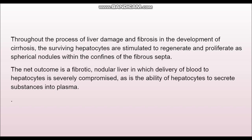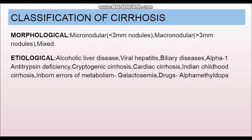Because of this chronic process of liver damage and fibrosis, cirrhosis develops. The surviving hepatocytes try to compensate by regenerating and proliferating, producing nodules that are confined within the fibrous septa. The net outcome is a fibrotic nodular liver in which delivery of blood to the hepatocytes and transportation is severely compromised, and therefore the liver cannot function properly.